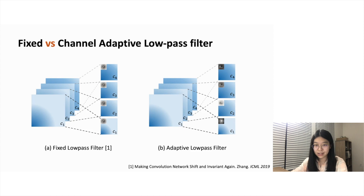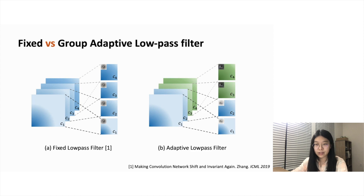However, predicting a low-pass filter for each spatial location and channel is both memory intensive and computationally expensive. With the observation that some feature channels share similar frequencies, we separate the channels into groups. For each channel group, different low-pass filters are predicted for every spatial location. Now we have understood how our approach operates on features, and we will go into details of how it is achieved in neural networks.